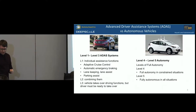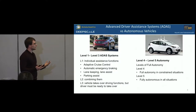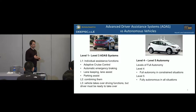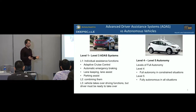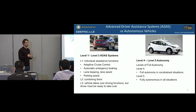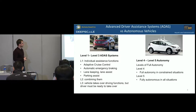Level one is individual assistance functions including, but not limited to, adaptive cruise control, automatic emergency braking, lane keeping or lane assist, parking assist, and so on — individual tasks that can be automated for a modest amount of time while still requiring the driver to be fully engaged. Level two is combining them; a common example is lane keep assist in conjunction with adaptive cruise control, modulating lateral and forward-backward movement in constrained environments like the highway. This is what GM Super Cruise and Tesla Autopilot are focused on.